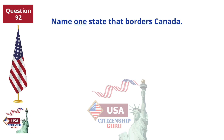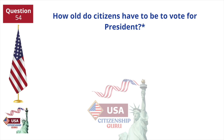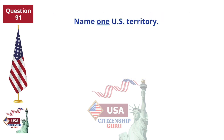Name one state that borders Canada. New York. How old do citizens have to be to vote for president? 18 and older. Name one U.S. territory. Guam.